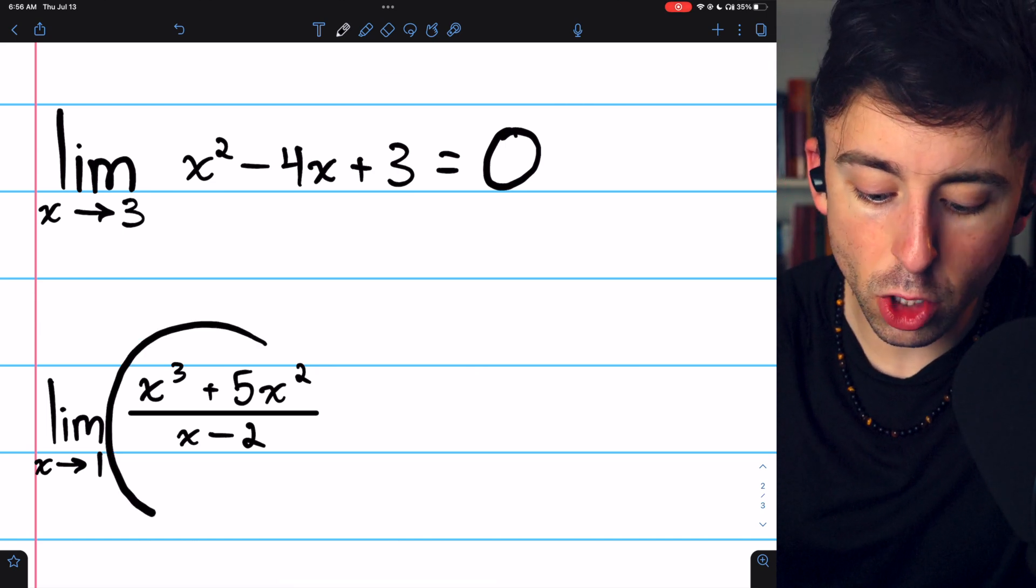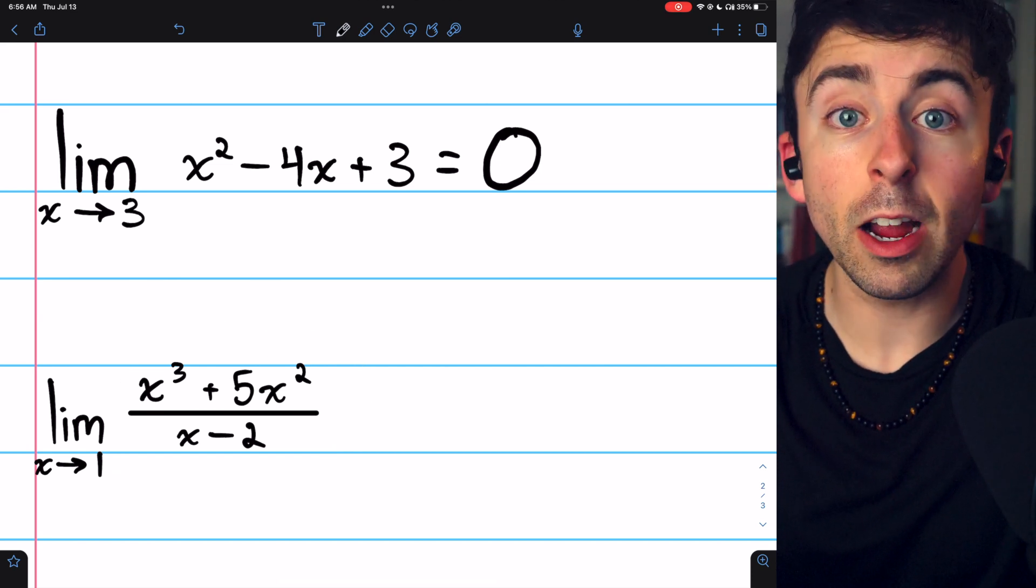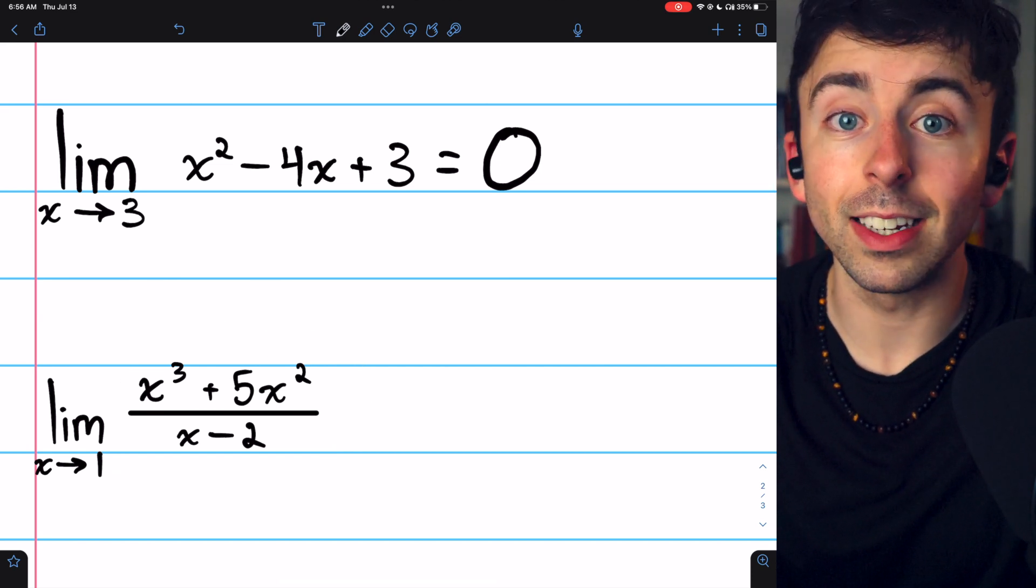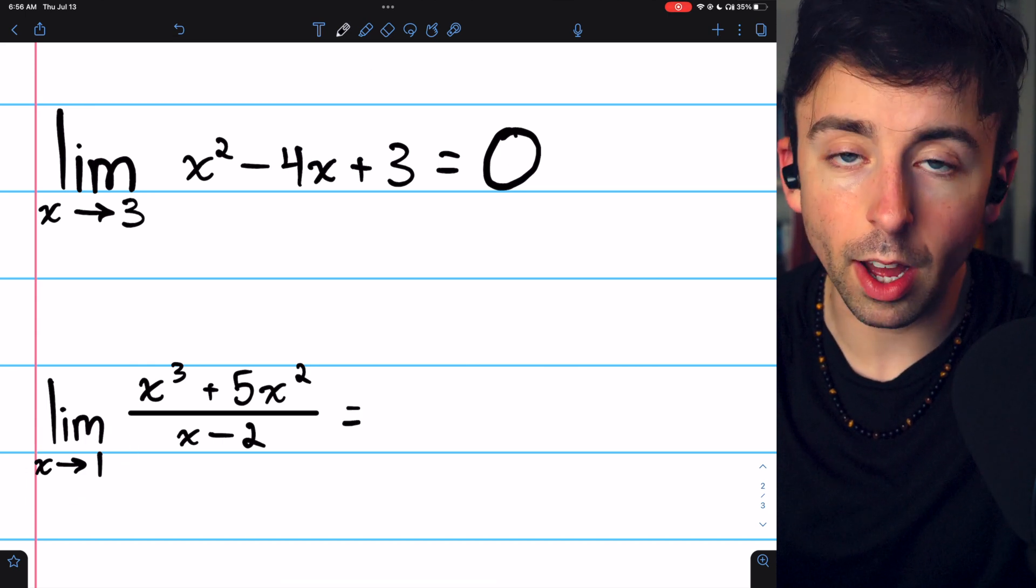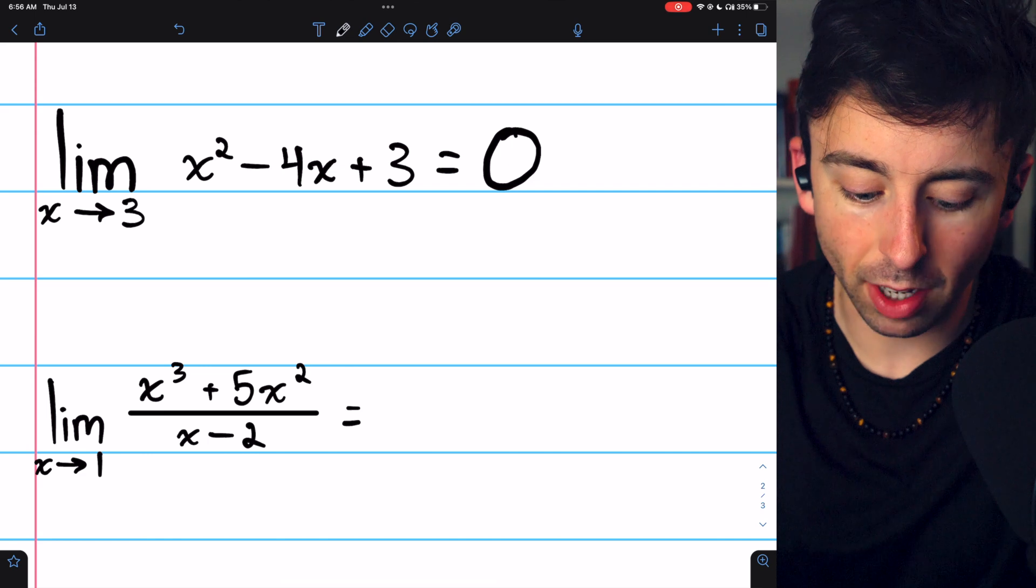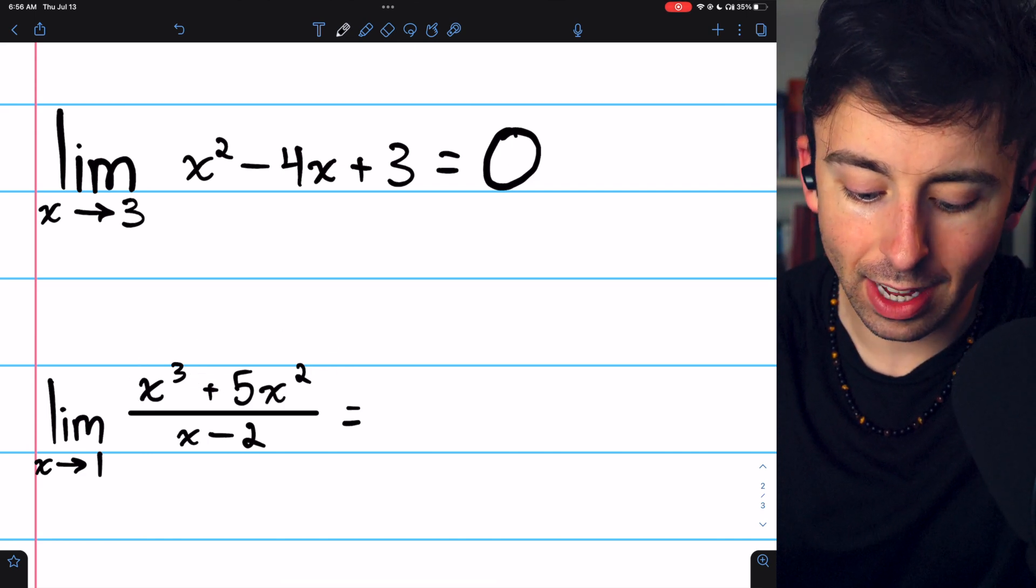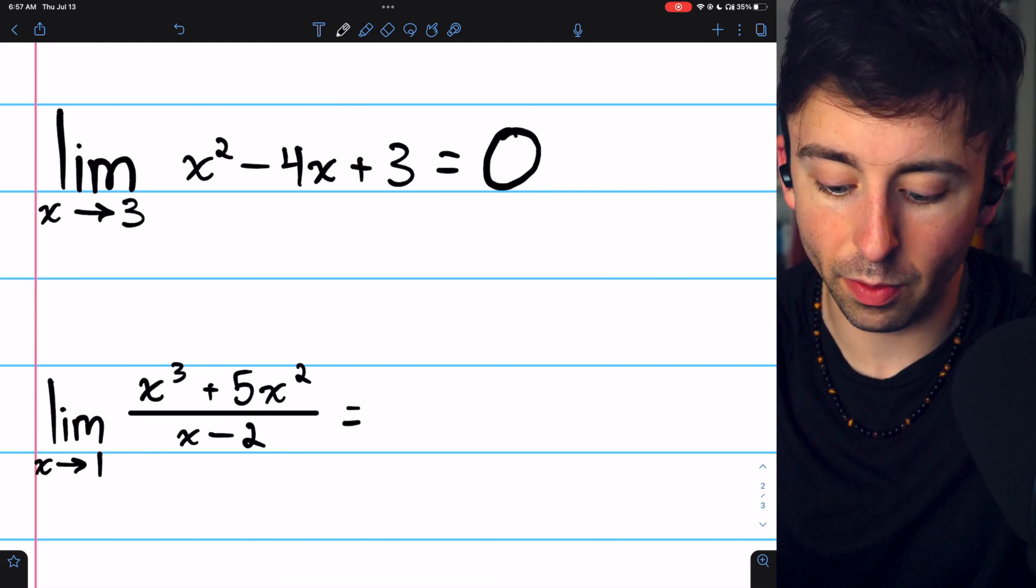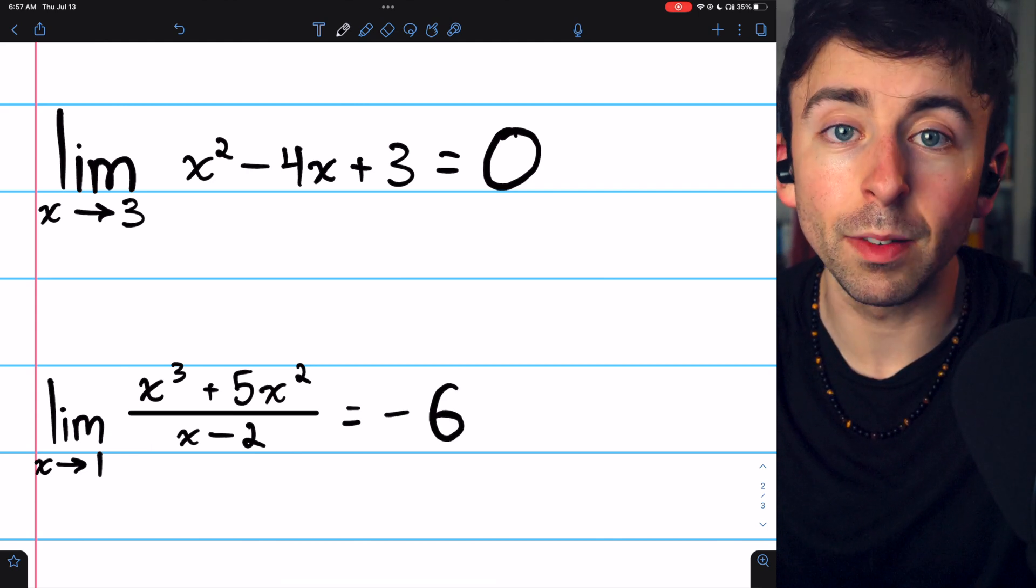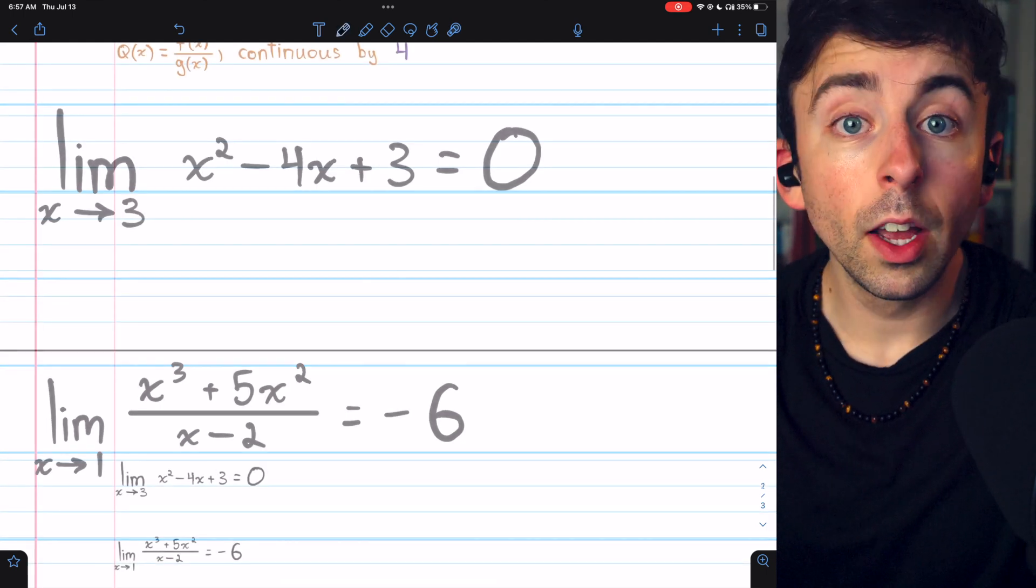What's the limit of x cubed plus 5x squared divided by x minus 2? Well, this is a rational function. So it's continuous. Since it's defined at x equals 1, we can just plug 1 in. That gives us 1 cubed plus 5 in the numerator, which is 6, divided by 1 minus 2, which is negative 1. So 6 divided by negative 1, or negative 6. Just plug it in. We get our limit, since these guys are continuous.